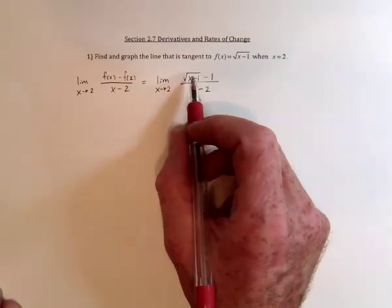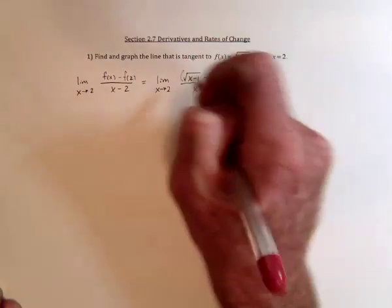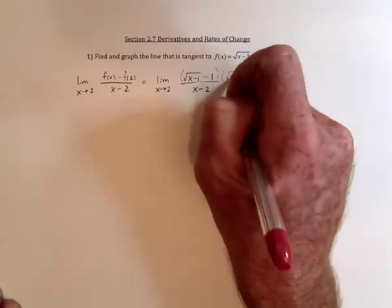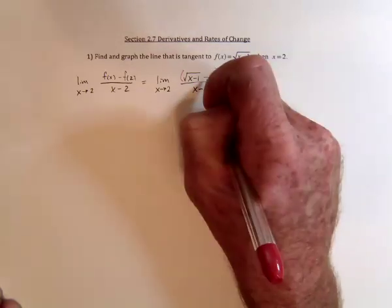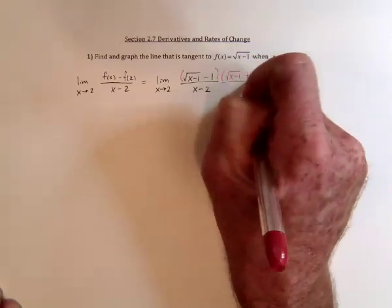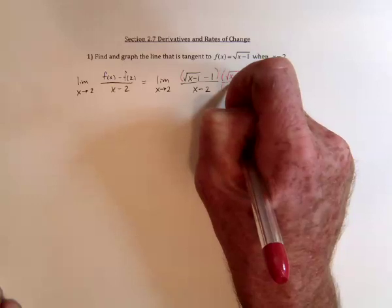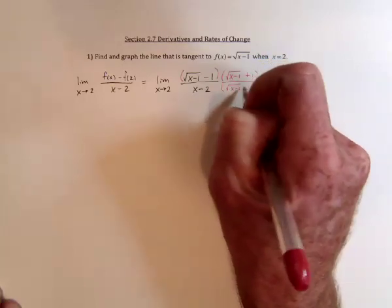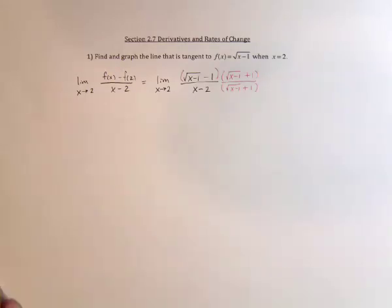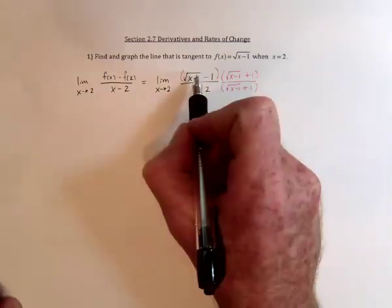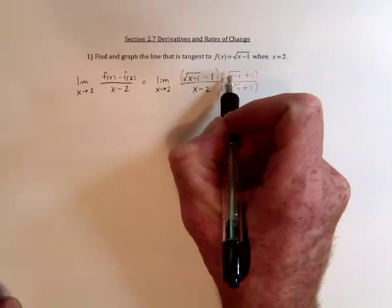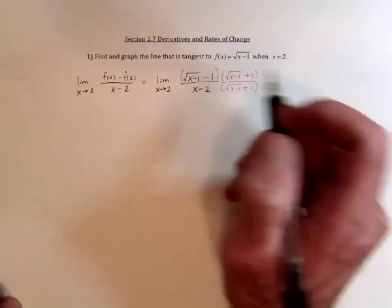We can eliminate the radical by multiplying by the conjugate, which is the square root of x minus 1, but using plus 1 instead of minus 1. Since that was done for the numerator, you also have to multiply the denominator by it. When using the conjugate, you multiply the first term times the first term — the radicals will be eliminated, leaving only x minus 1.